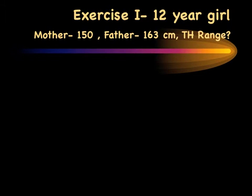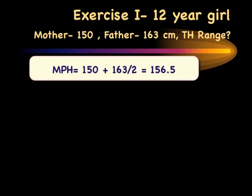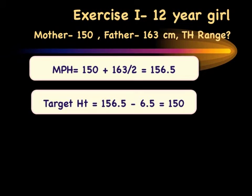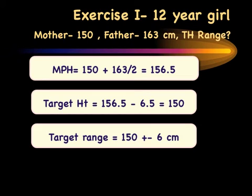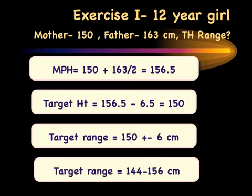Example: for a 12-year-old girl whose mother is 150 cm and father is 163 cm, the mid-parental height equals (150 + 163) ÷ 2 = 156.5 cm. For a girl, subtract 6.5 cm, giving a target height of 150 cm. The target height range is therefore 150 ± 6 cm, which is 144 to 156 centimeters.